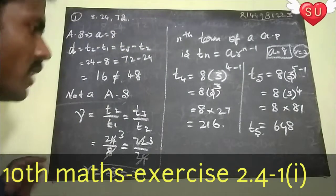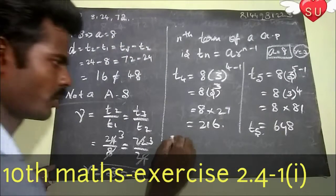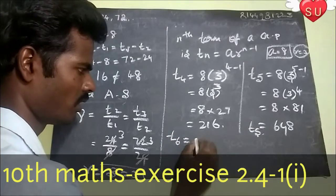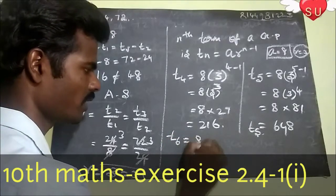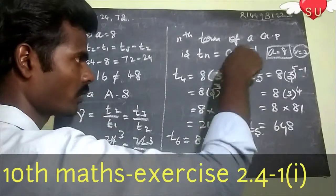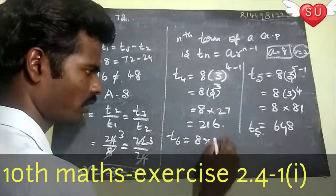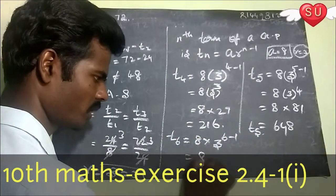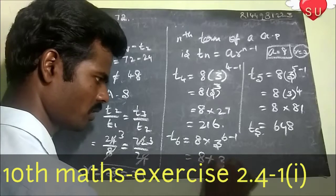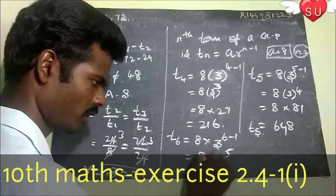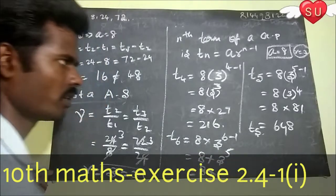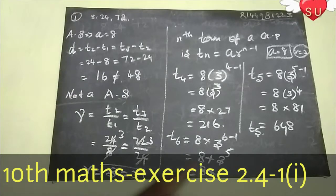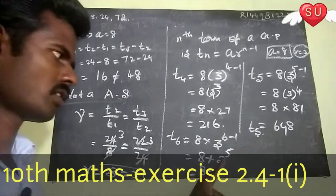The next number is T6, the 6th term. So T6 equals A into R to the power n minus 1, with A equals 8, R equals 3, and n equals 6. That gives 8 into 3 to the power 5.